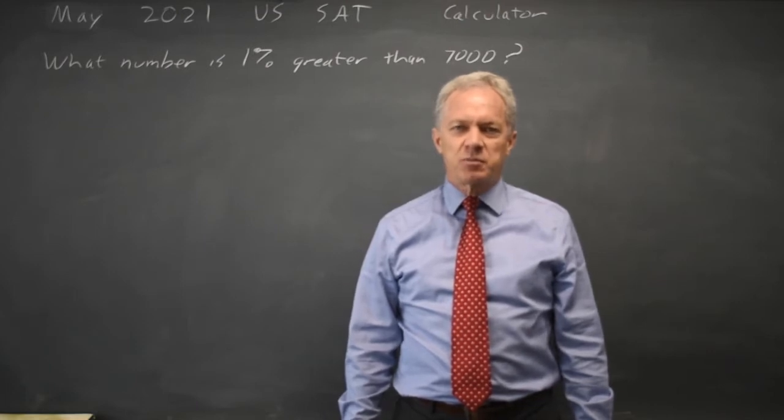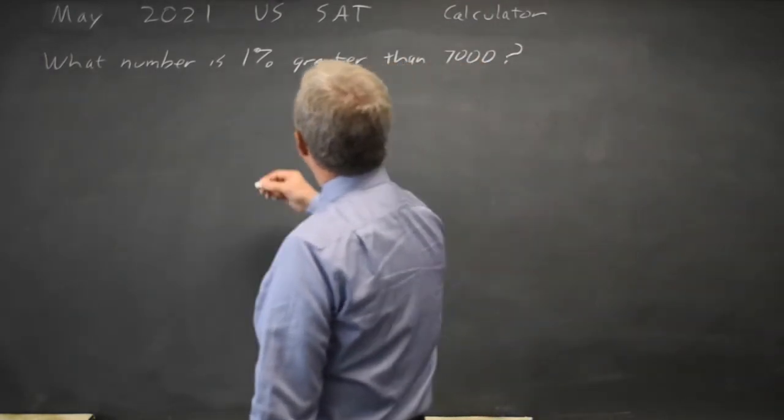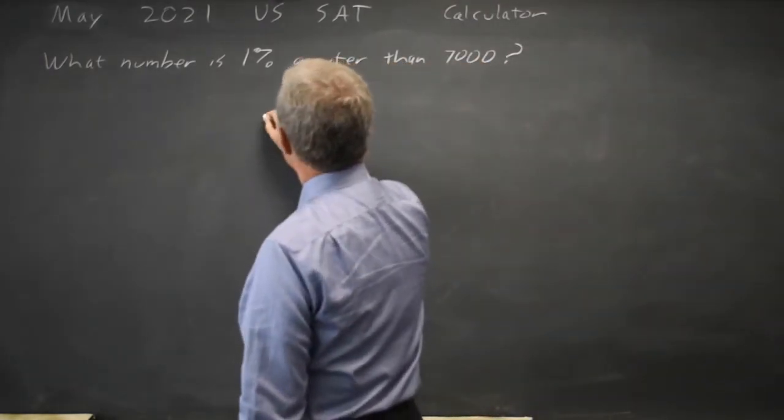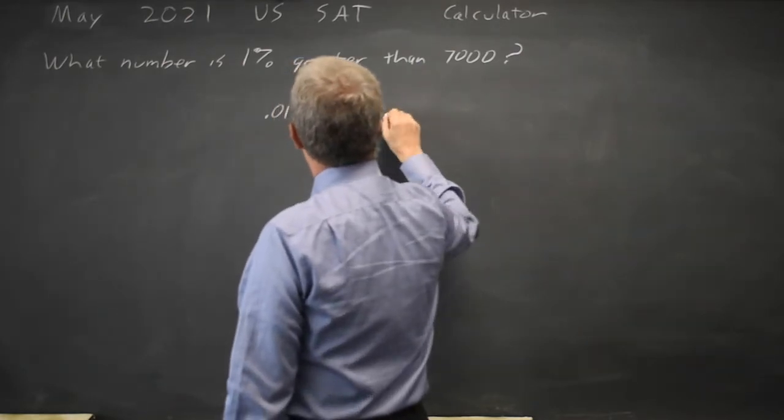College Board is asking for a number that's 1% greater than 7,000. 1% of 7,000 is 0.01 times 7,000, which is 70.